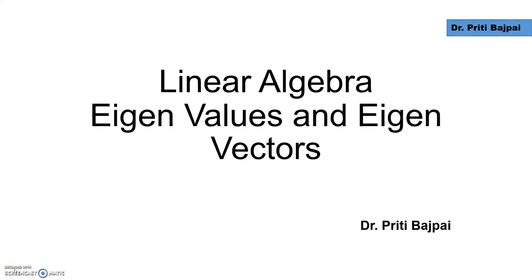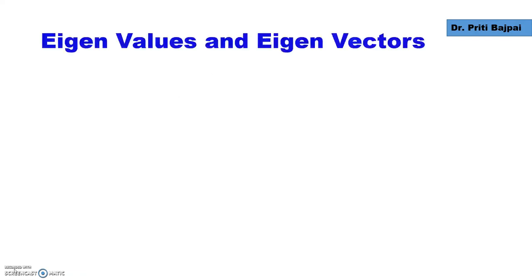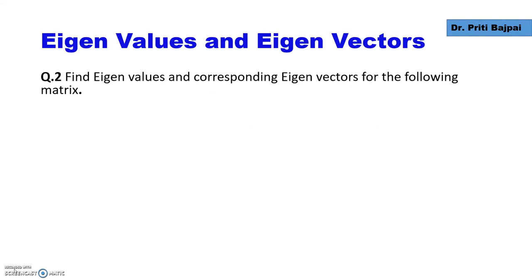In the previous video we saw how we found eigenvalues and eigenvectors for a matrix of order 2. Let's see how we find eigenvalues and eigenvectors for matrices of order 3. We'll start with an example.